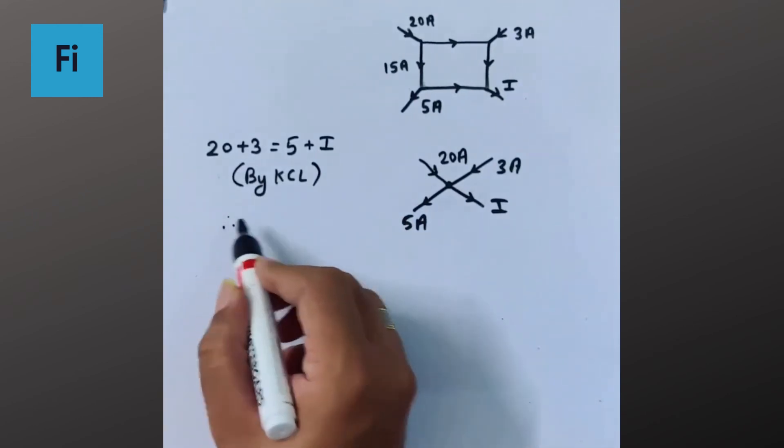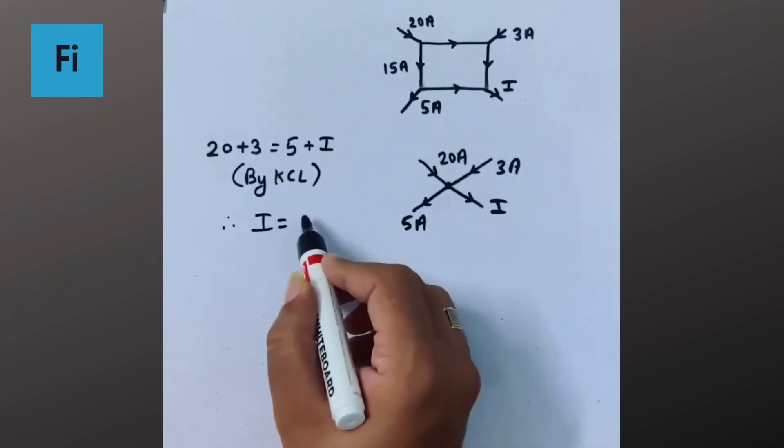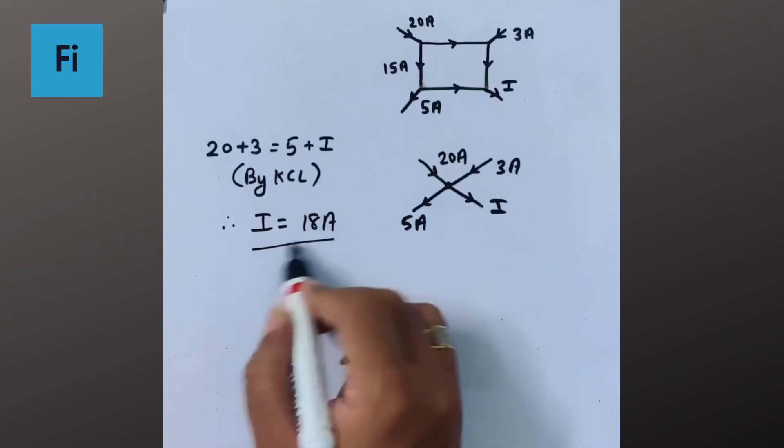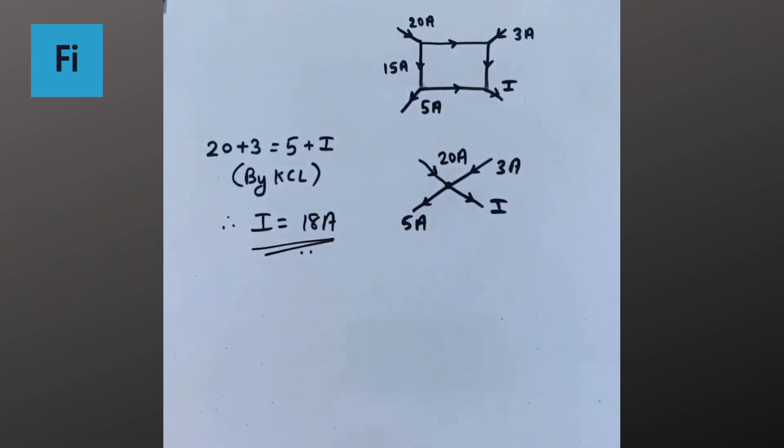So that means the current is going to be 18 amperes and that is going to be the final answer.